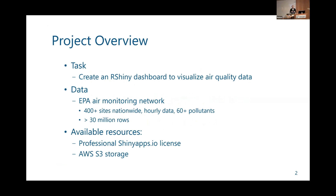Tons of data — the whole data set for this specific network was over 30 million rows, 400 sites all over the country, hourly data, and some monitors date back to 2010. What we had available for resources were a professional Shiny Apps license and S3 storage. It was a puzzle to figure out how to do this, because the first thing you think of is SQL, but we didn't have a SQL license.